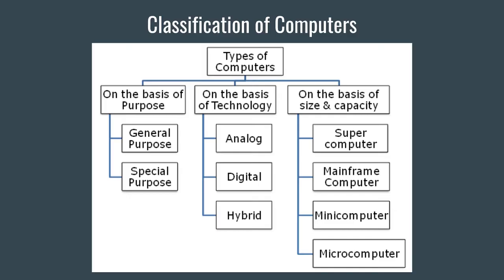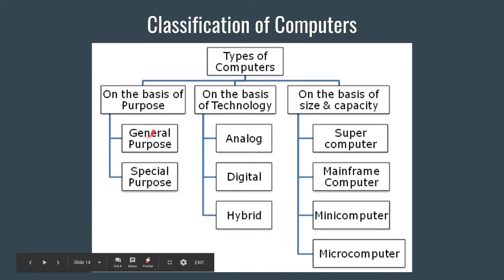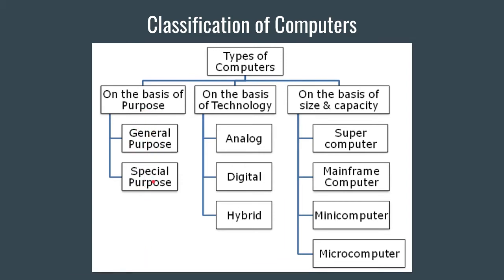Accordingly, computers have been classified based on their purpose, based on their size, and on the basis of technology. The first classification is on the basis of purpose — general purpose and special purpose computers.